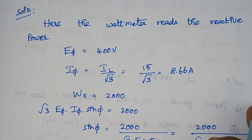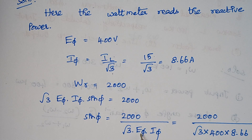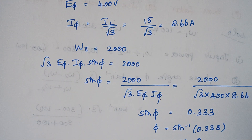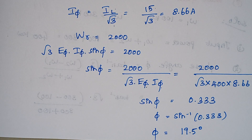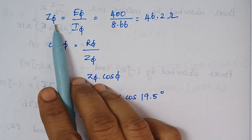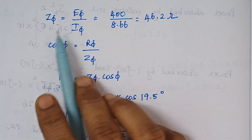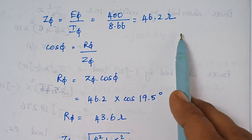We find sin φ = 2000 / (√3 · E_phase · I_phase) = 2000 / (√3 × 400 × 8.66). Substituting the values gives sin φ, then moving sine to the right-hand side, the value of φ is 19.5 degrees. The impedance per phase is given by Z_phase = E_phase / I_phase. Substituting the known values gives Z_phase = 46.2 ohms.